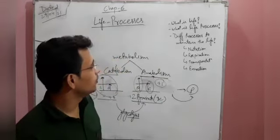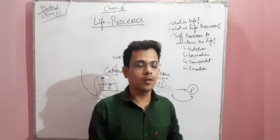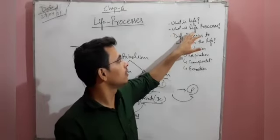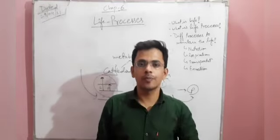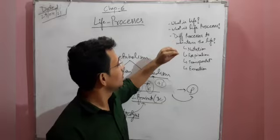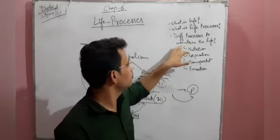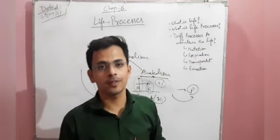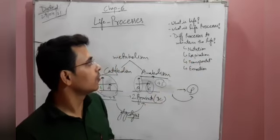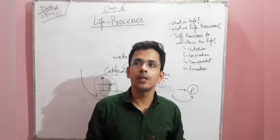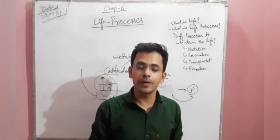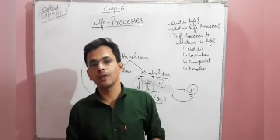So we have seen what life is, how different processes work to maintain life, and the different processes — nutrition, respiration, transportation, and excretion. Now, when we talk about the mode of nutrition, it is very different in unicellular versus multicellular organisms.